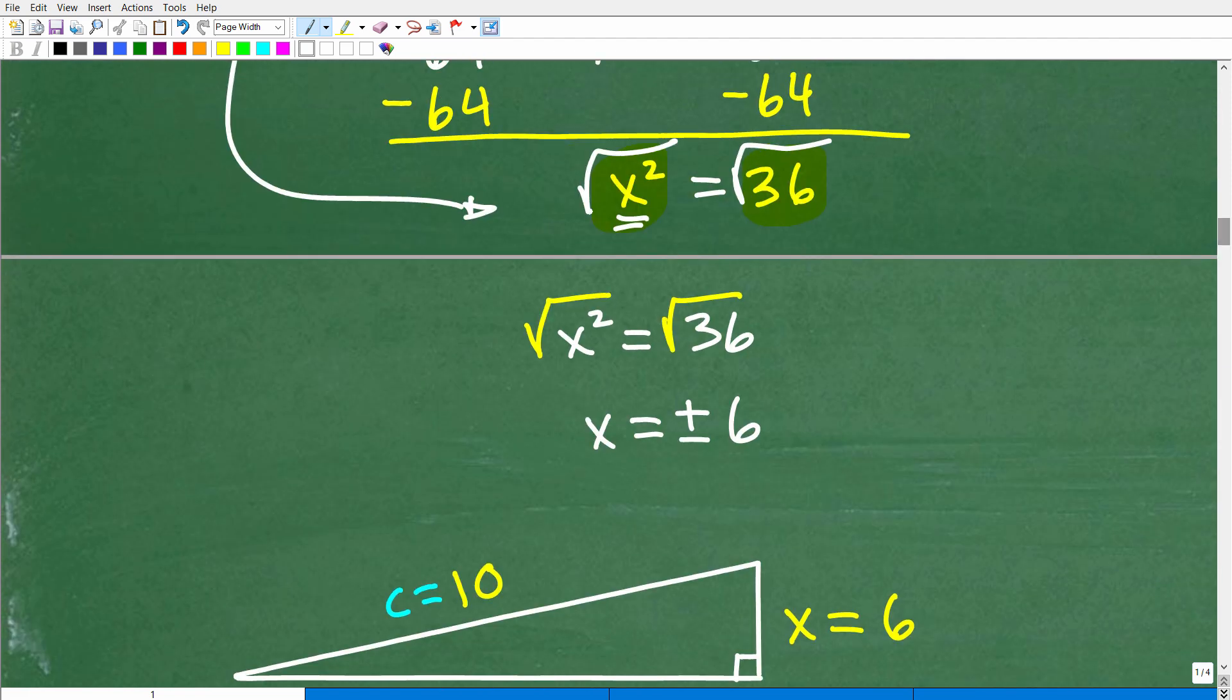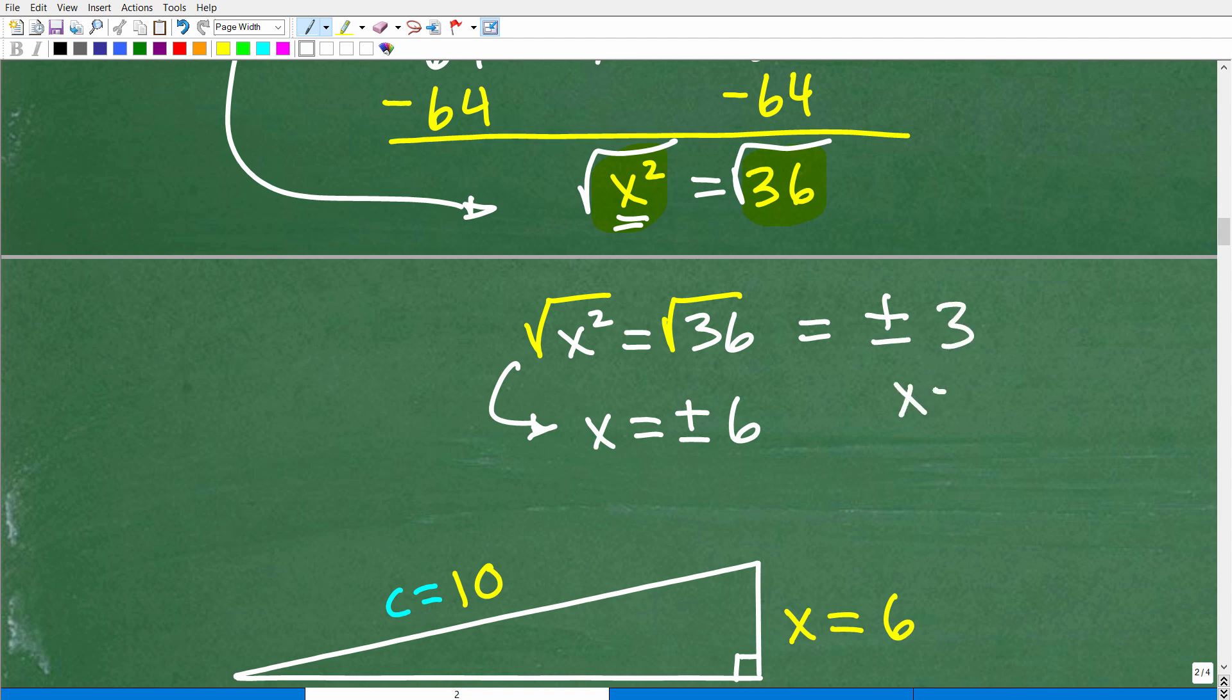Just take the square root of both sides of the equation. The square root of x² is x. And that's what I want. And the square root of 36 is both positive and negative 6.